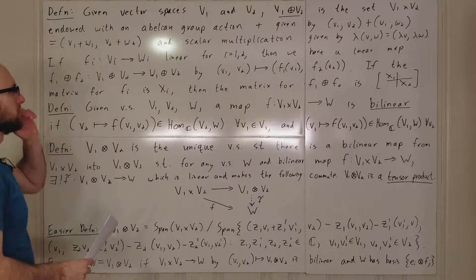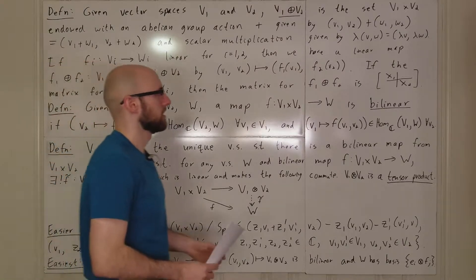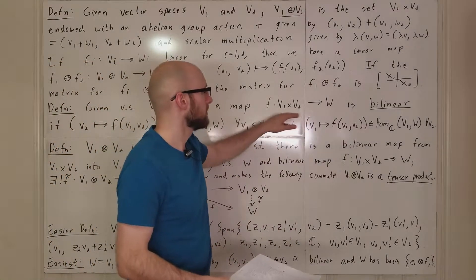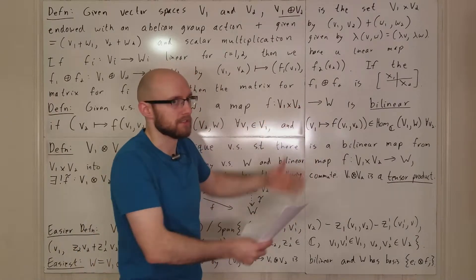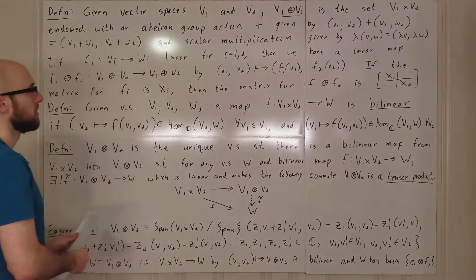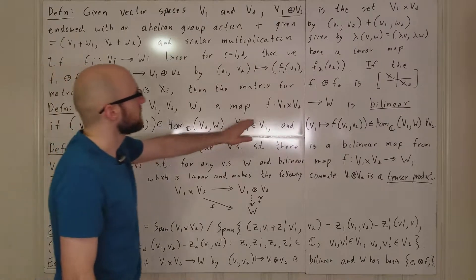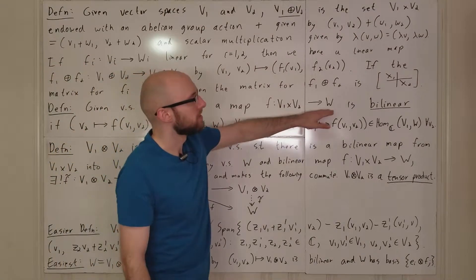Also, we have a definition of a bilinear map. Basically, a map is bilinear if it's linear and linear, so it's bilinear. So if we have a map F that goes from V1 cross V2 into W, then if you fix the,